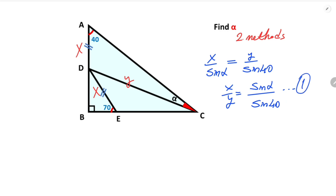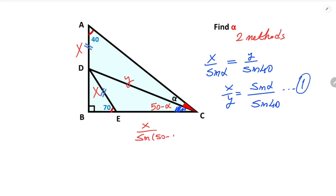This is the first equation. Now also if you apply the sine rule for this triangle — we know that angle ACB is 50 degrees, so 50 minus alpha remains here. Therefore if you apply the sine rule: x over sine(50 minus alpha) equals...